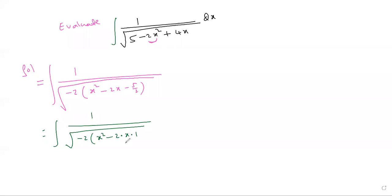This is a² - 2ab. a² - 2ab + b² we have to write. Plus 1² immediately write minus 1² minus 5/2 already is there, dx.